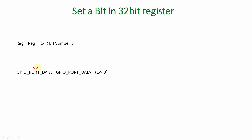Let's take an example to understand how this technique works. I'm going to set a particular bit of a register called GPIO port data of our microcontroller. Let's take the third bit of the register, so: GPIO_PORT_DATA = GPIO_PORT_DATA | (1 << 3). Let's understand how this line sets bit number three in the register without disturbing or touching the state of other bits.